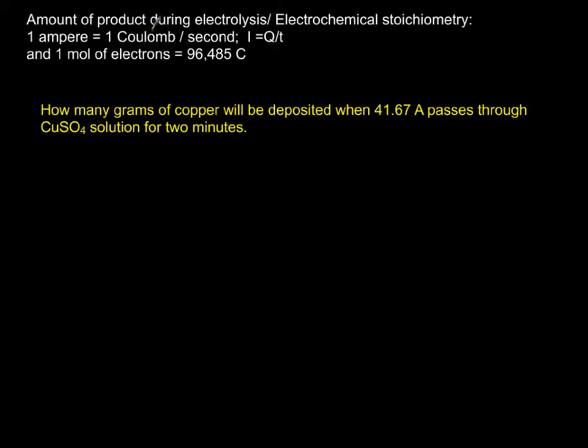Now the amount of product that you produce during electrolysis, which we just mentioned, there are three factors involved, is also known as electrochemical stoichiometry.